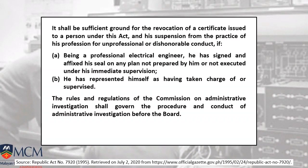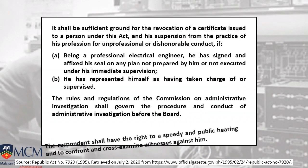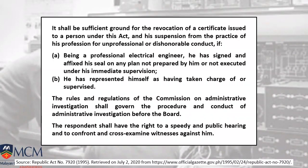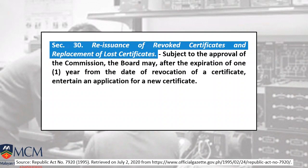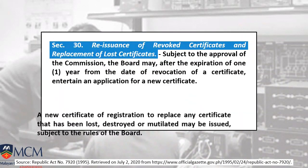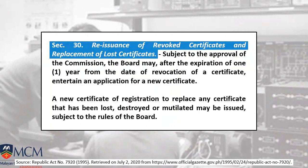The rules and regulations of the PRC on administrative investigation shall govern the procedure and conduct of administrative investigation before the Board of Electrical Engineers. There is also a possibility of reissuance of revoked certificates, and take note of replacement of lost certificates — subject to the approval of the commission after the expiration of one year from the date of revocation. A new certificate can replace one which has been lost or destroyed.